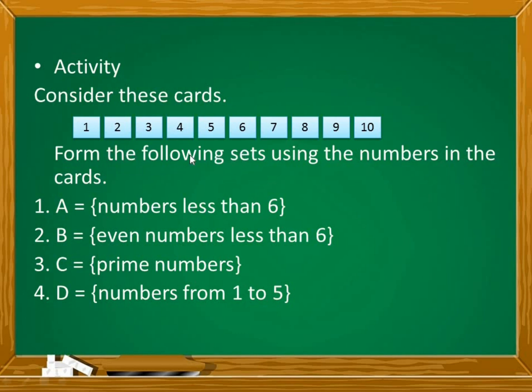We may consider this as our main set. You may pause this video to do this task. Revealing the correct answers: for number 1, we have set A is equal to a set with elements 1, 2, 3, 4, and 5. These are the numbers less than 6.